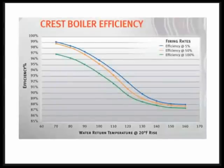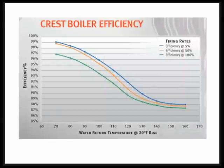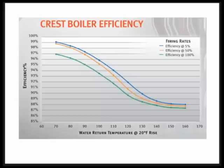Mother Nature dictates what these efficiency curves look like. It's all based on the dew point of gas and the combustion products in the flue stack. If you look at the lower right portion of this chart, return water temperatures of 140, 150, or 160 degrees means we're in non-condensing mode at around 87 to 89% efficiency. The colder the return water temperature, the higher the efficiency — true for every condensing product on the market. There are three curves: 100%, 50%, and 5% firing. Lower firing rates are always more efficient at a given inlet temperature.